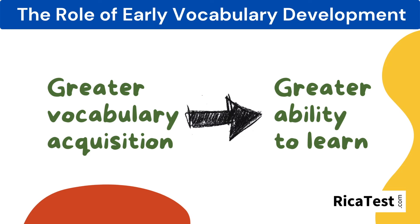The greater a student's vocabulary acquisition — the amount of words they understand — the more topics they are capable of learning. But this works both ways, because the more topics a student learns about, the more words they pick up. The relationship between vocabulary, academic language, and background knowledge is connected, and RECA test scores will want you to understand that. Furthermore, effective vocabulary instruction contributes to the growth of background knowledge.